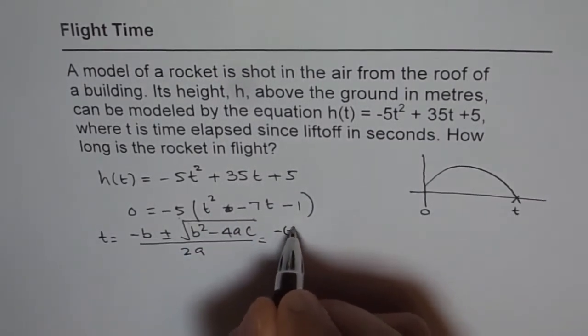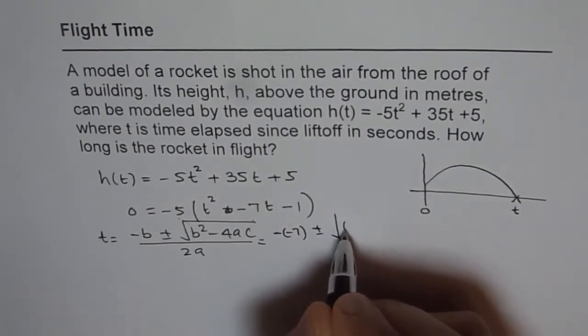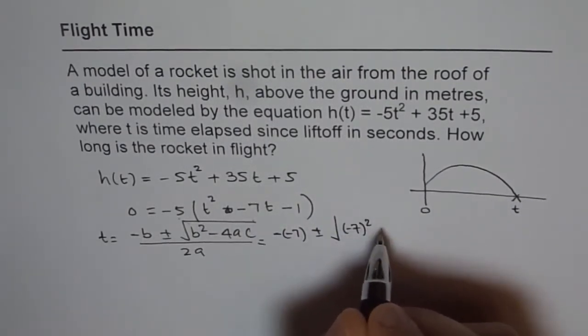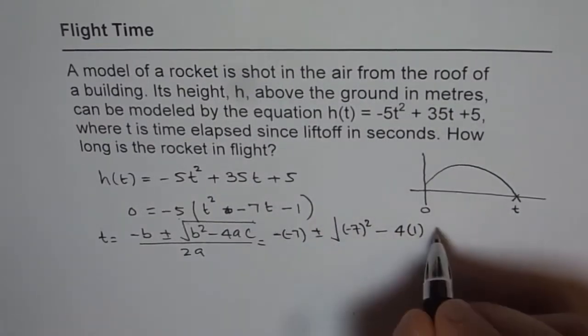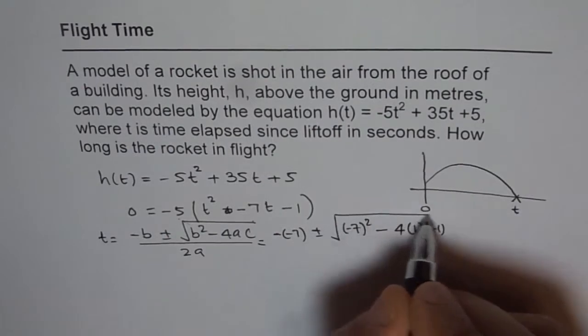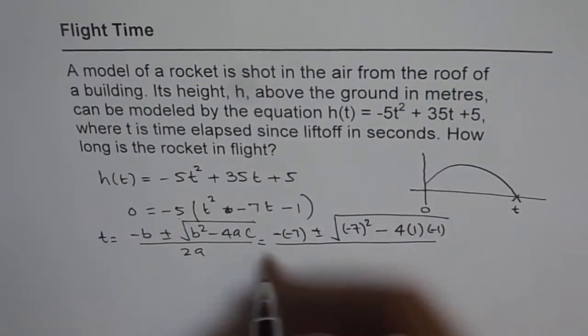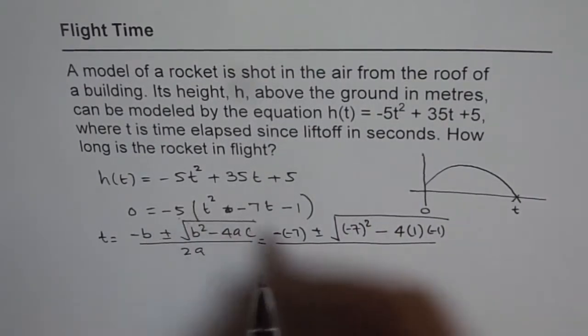So we have -(-7) ± √((-7)² - 4 times a is 1 and c is -1) divided by 2 times a. And a in this case is 1.